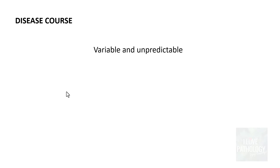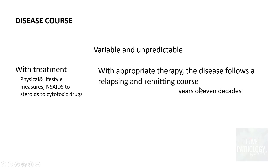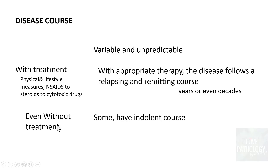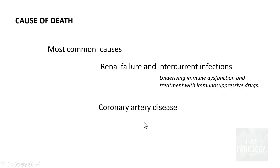Once a diagnosis of SLE is made, the disease course is variable and unpredictable. Treatment is multimodal — from physical and lifestyle modifications to NSAIDs, steroids, and cytotoxic drugs. With treatment, the disease follows a relapsing and remitting course over years or even decades, though some patients have an indolent course even without treatment. The most common causes of death in SLE patients are renal failure due to lupus nephritis, and intercurrent infections resulting from immune dysfunction or immunosuppressive treatment. Coronary artery disease is another important cause of death.